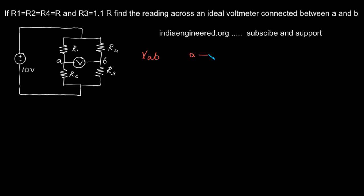This is because an ideal voltmeter has infinite resistance and it does not carry any current. Now we are going to draw the equivalent circuit considering this into account.